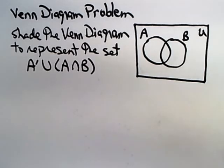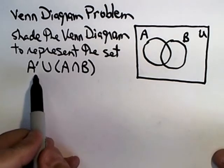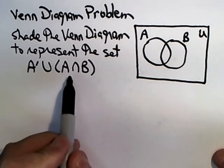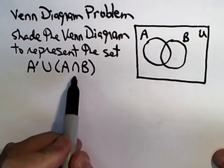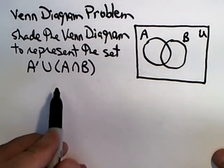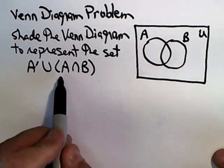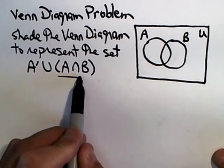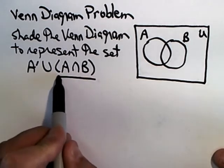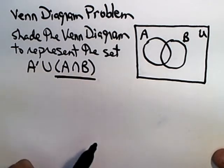In this Venn diagram problem we were asked to shade a more complicated expression which involves an intersection and a union. You have to be really careful, but when you're reading this and you see these parentheses, you always want to work inside parentheses first.